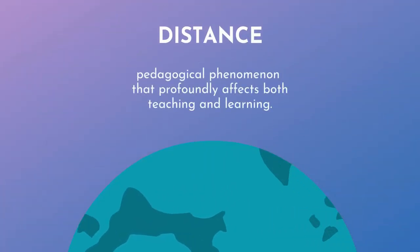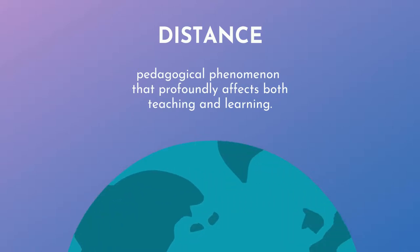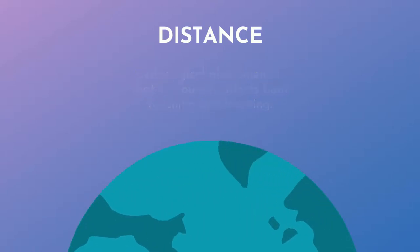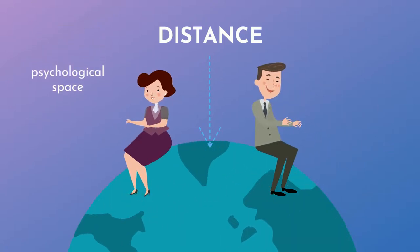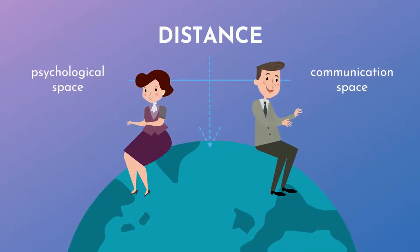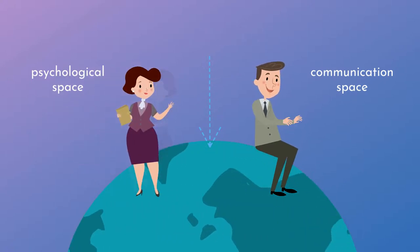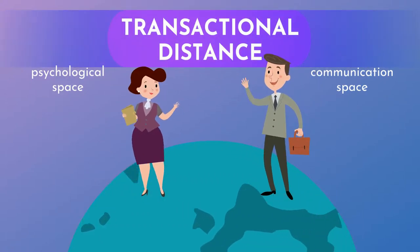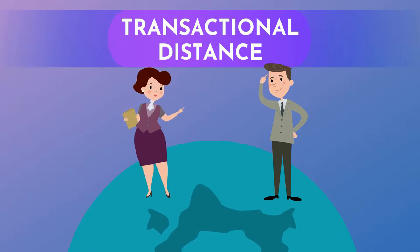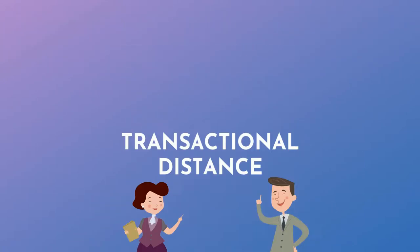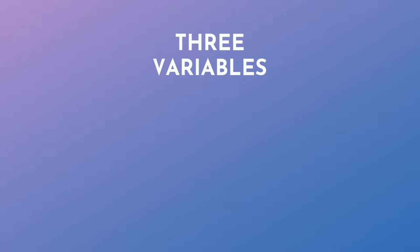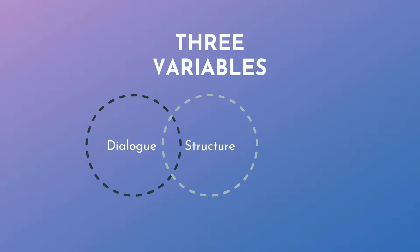Distance is a pedagogical phenomenon that profoundly affects both teaching and learning. Between and with separation of teachers and learners, there is a psychological and communication space to be crossed. The psychological and communication space is the transactional distance. The extent of transactional distance in an educational program is a function of a set of three variables, and different relationships and strength of relationship among and between variables make up transactional distance.